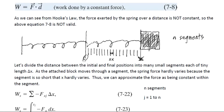Here's our solution. Let's take the stretch from the relaxed position at zero out to position x, and divide that segment into n pieces, each of width delta x. If we let delta x be very small, the change in force over that interval is also very small, and we can assume a nearly constant force over each segment. So we can use force times distance for each segment, and the total work is the sum of all those individual pieces.